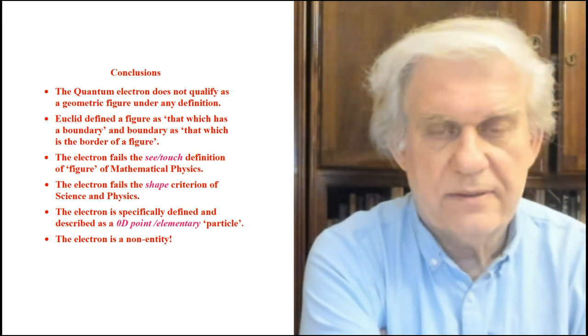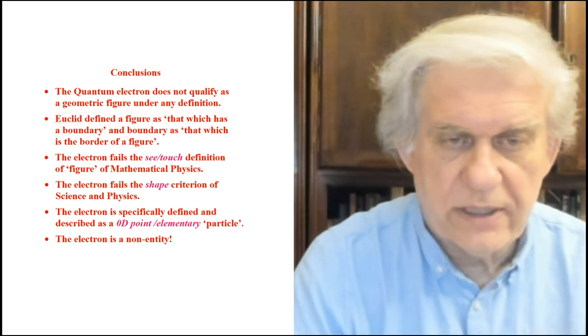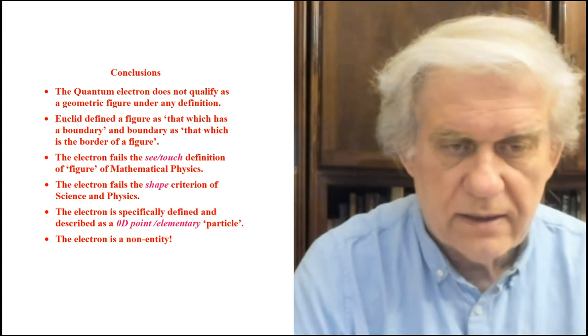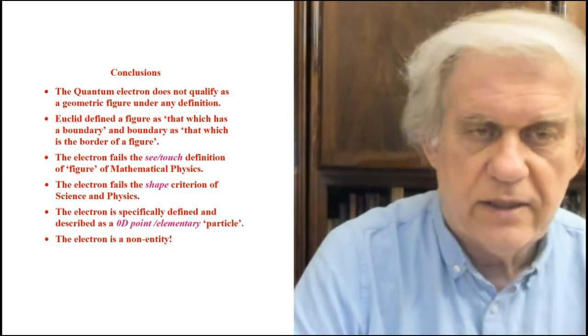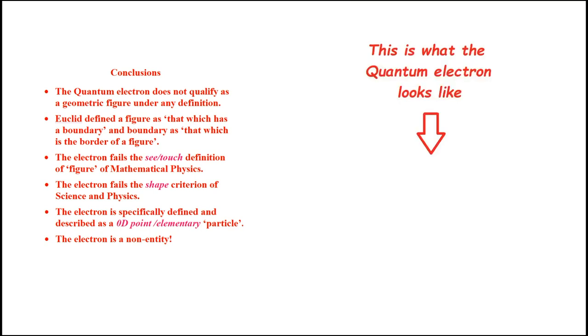So let me show you the quantum electron — the famous one. There it is, right underneath the arrow. If that's a geometric figure, then you have the electron as a thing. But if you see nothing there, well, then the electron is absolutely nothing by definition, by description, and by the way it's used — because mathematicians don't care about bodies anymore, only about what number to put in an equation.